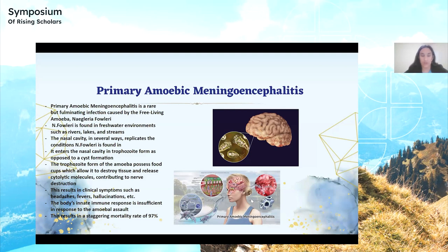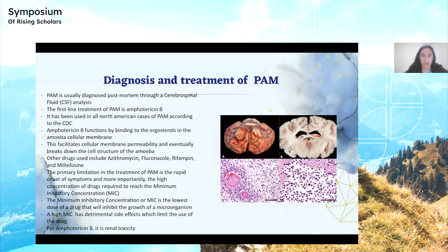When we talk about diagnosing both of these indications, both are rare — there have been only 157 North American cases from 1962 to 2022. Because of nonspecific symptoms, both indications are often diagnosed postmortem through a cerebrospinal fluid analysis, and the first line of treatment are antifungals and antibacterials. Because of these rare indications, there are no specific drugs tailored to them.